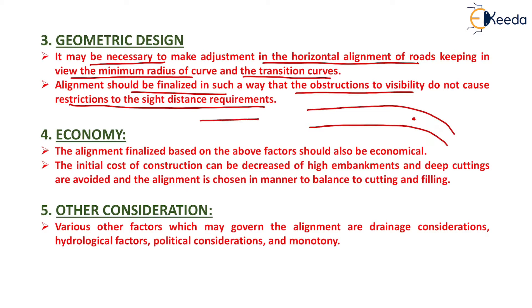If we finalize an alignment that creates a sharp obstruction, this type of alignment will cause a restriction to the sight distance. If one vehicle is coming from one direction and another from the opposite direction, there will be a point where both vehicles strike each other and an accident takes place. So the alignment must be kept such that obstructions do not restrict stopping sight distance or overtaking sight distance.